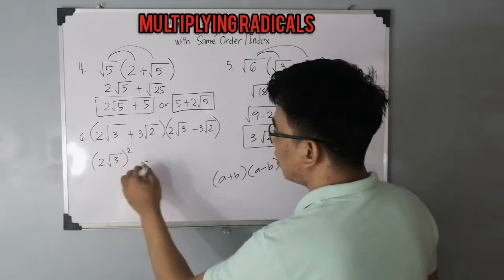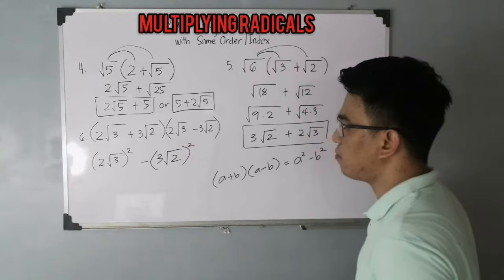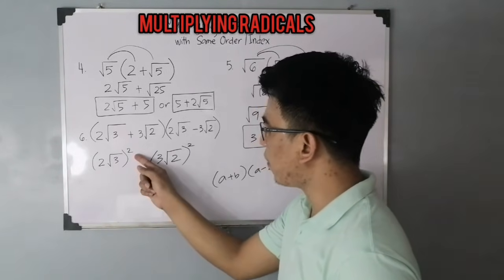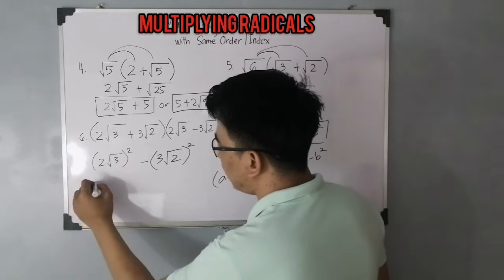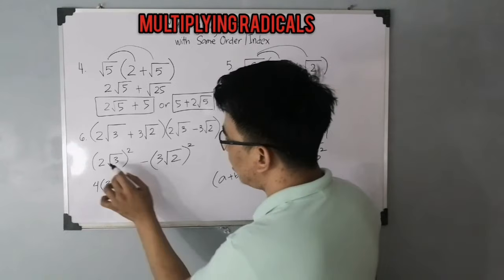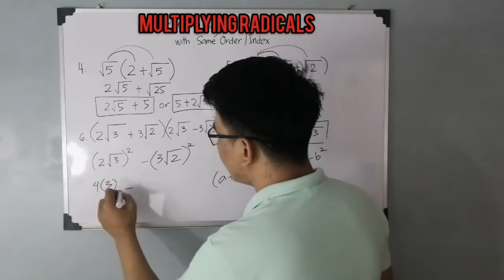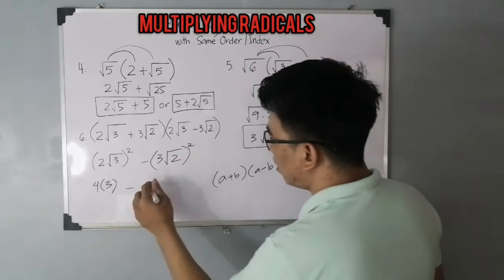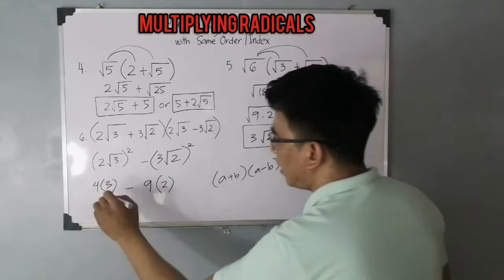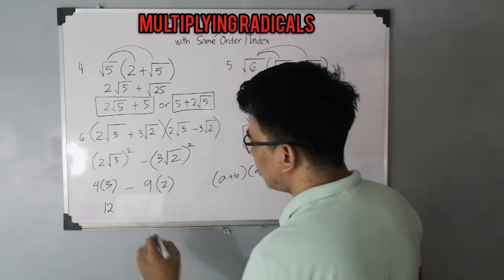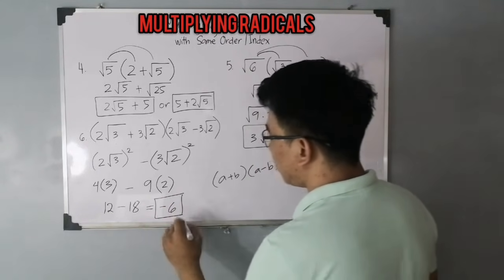Simplifying: (2√3)² equals 4 times 3, which is 12. Then minus (3√2)² equals 9 times 2, which is 18. So we have 12 minus 18, which gives a final answer of negative 6 for item number 6.